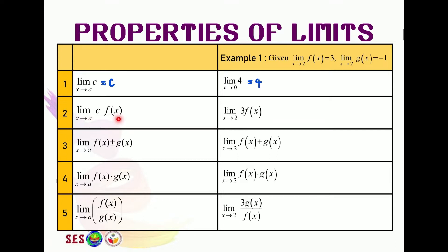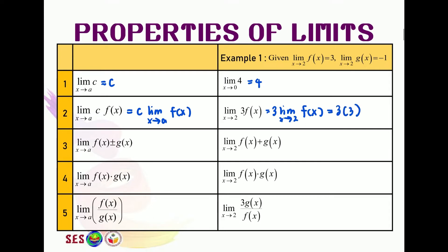For the second property, if you have a constant multiplied with a function, this will become c times the limit of x approaching a for fx. We have constant 3 multiplied with function fx. Because of this property, we can factorize 3 out and this will become 3 times the limit of x approaching 2 for fx. It is given that the limit when x approaches 2 for fx equals 3. Therefore, this becomes 3 multiplied by 3 and the answer is 9.